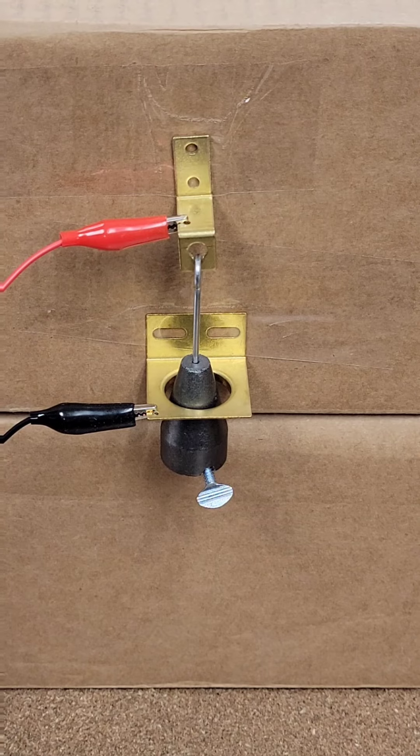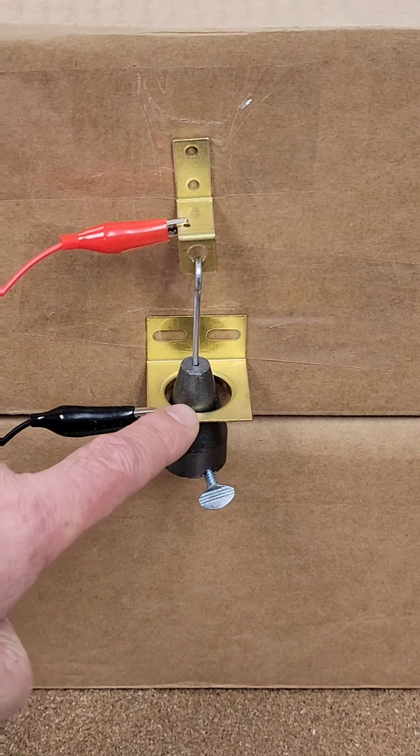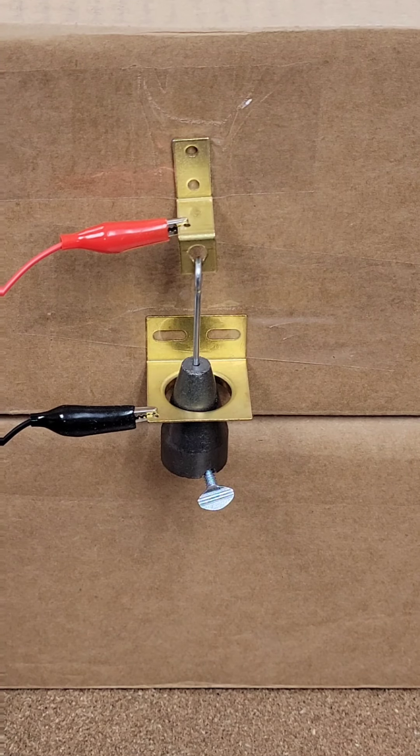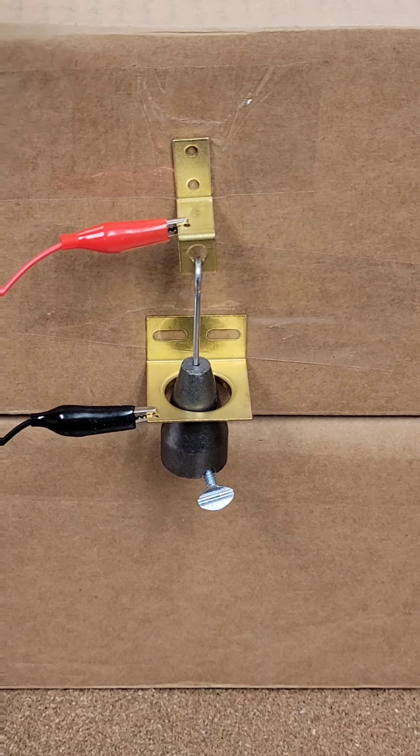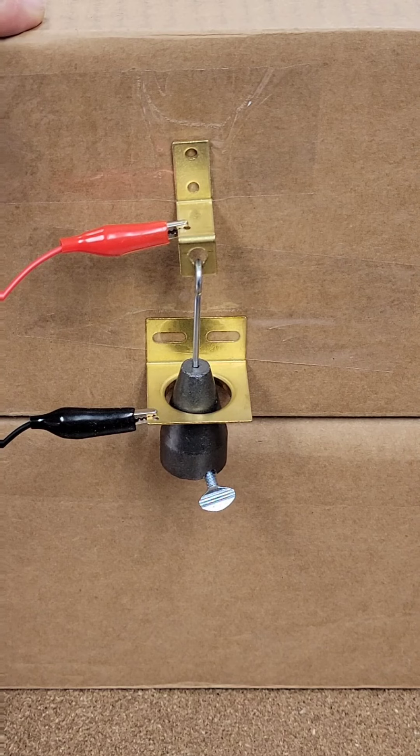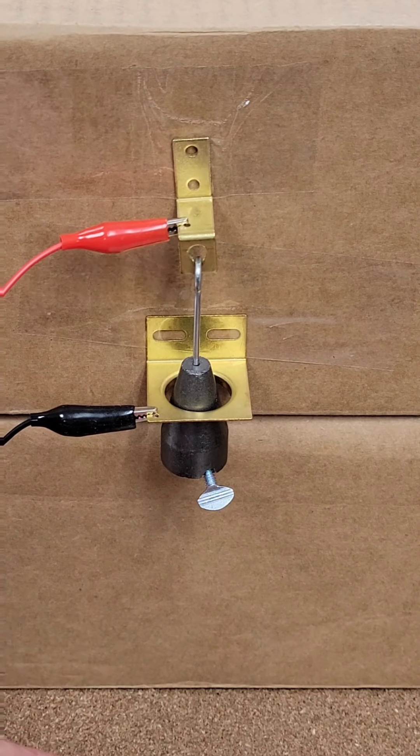When you shake a pinball machine that bob will move and when it makes contact with this ring it actually closes the circuit and it'll send a signal saying the machine's been shaken too much and so you'll get a tilt warning. You can actually adjust these depending on how vigorous you want to be.